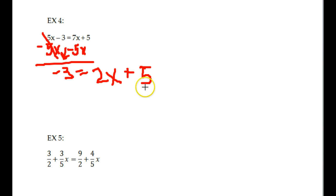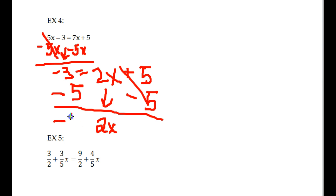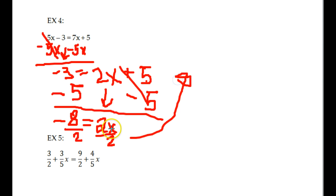Now what am I going to do? I'm going to subtract the 5. Why? You always want to deal with your constant before your variable once you get to this step. In the first part we dealt with variables first; down here we deal with the constant first. These cancel out — bring down your 2x. Negative 3 minus 5 is negative 8. So divide both sides by 2. Negative 8 divided by 2 is negative 4 — in other words, 2 times what gives me negative 8? Negative 4 equals x.